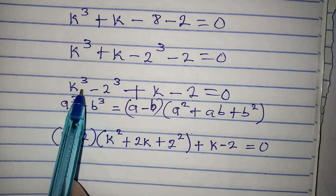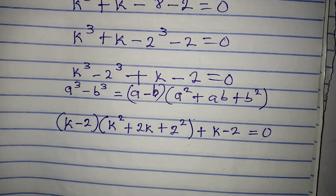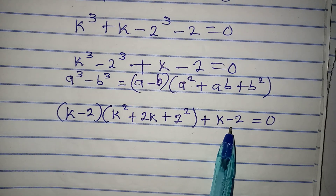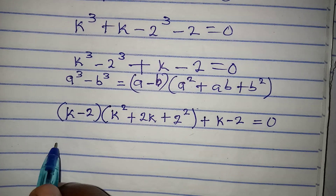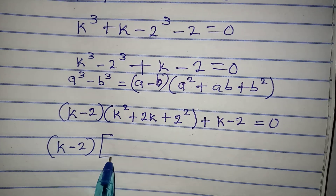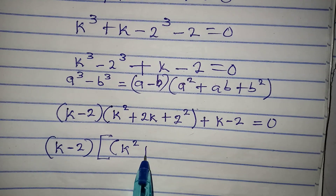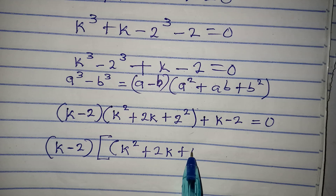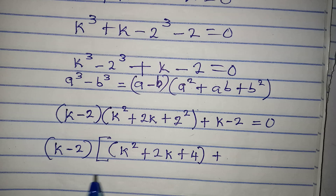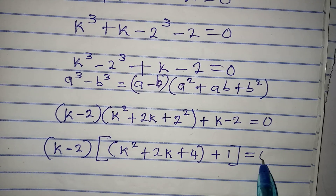Looking at this carefully, we have (k minus 2) here and (k minus 2) there, so we can factor (k minus 2) out. Factoring gives (k minus 2) times (k² plus 2k plus 4 plus 1), and we close the bracket and equate to zero.